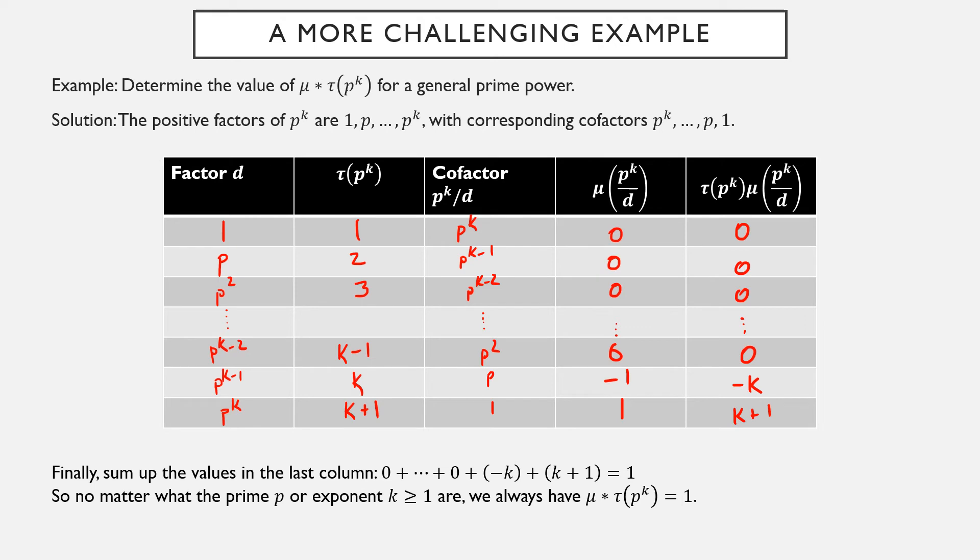So it actually did not matter what the prime was or what the exponent was. I mentioned earlier that if k is only equal to 2, only the first two rows exist. But in that case, these cofactors would have been p and 1 respectively, and so these values would have shown up in the first two rows here. So you can check that it actually does not matter if k is 0, 1, or 2, or anything larger. You're always going to have these two products show up as your only two relevant values. They will always add together to give you 1. So mu star tau of any prime power is always 1. So even though mu and tau individually might behave kind of unpredictably, their Dirichlet convolution is a very, very simple function.